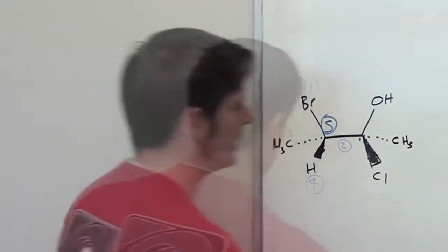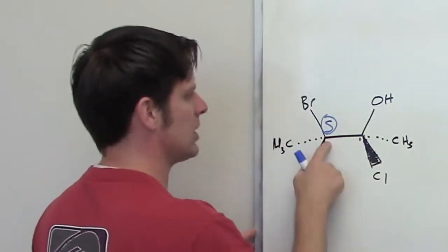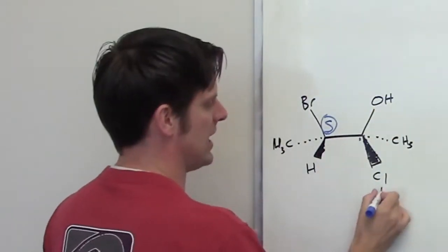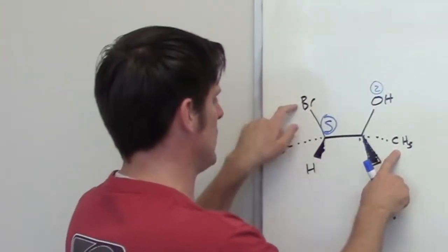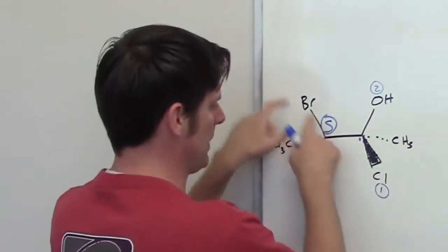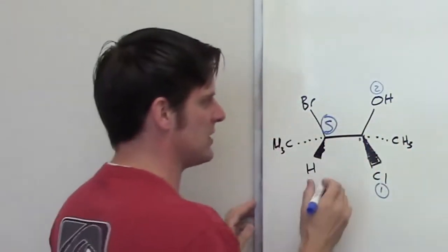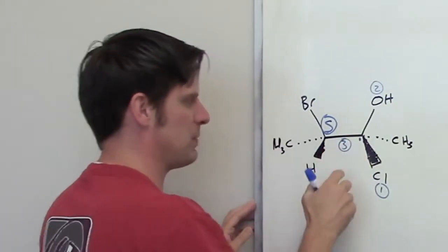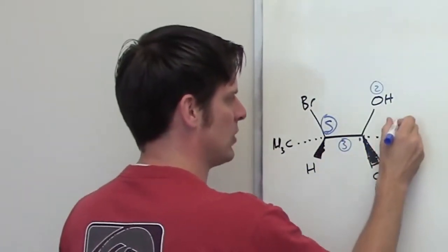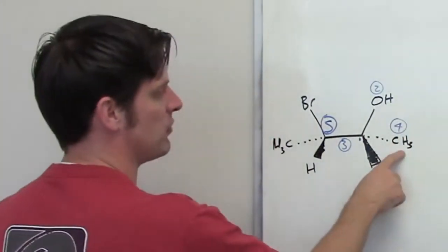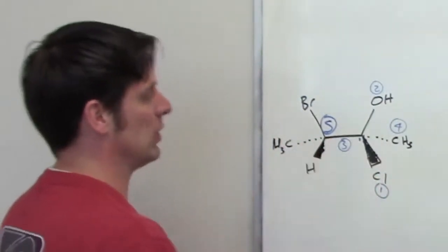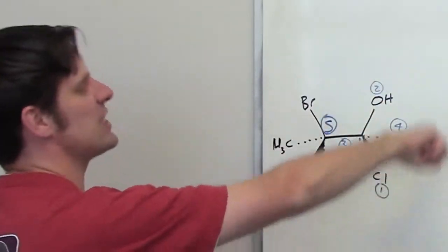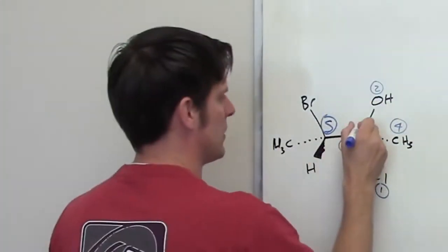Now I'm going to erase these numbers and do the same thing for the stereocenter here to the right. Looking at this rightmost stereocenter, it's bound to a chlorine, a carbon, a carbon, and an oxygen. Chlorine has the highest atomic number. Oxygen has the second highest atomic number, and carbon and carbon tie. Going out to break the tie: this carbon is bound to a bromine, this one is bound to hydrogens. The bromine breaks the tie, which means this entire branch to the left is priority group number two, while this methyl is priority group number three. Group number four is pointing three-dimensionally away from us, so going from one to two to three is counterclockwise, which means this stereocenter is also S.